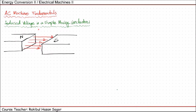Let us place a conductor under this magnetic field. Now if this wire is static, that means if the wire is not moving with respect to this magnetic field, nothing will happen to this wire — no voltage will be induced. However, if we start moving this wire in any direction there will be some induced voltage, as we came to know from our previous lecture.